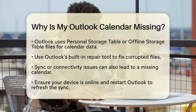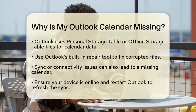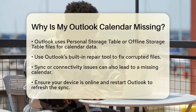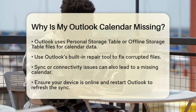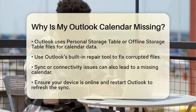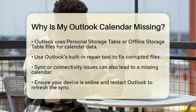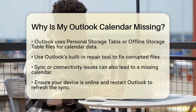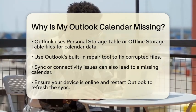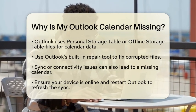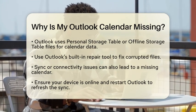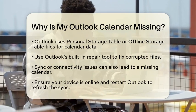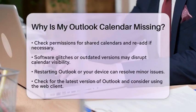Another reason your calendar might be missing is due to sync or connectivity issues. If your internet connection is poor or if there was an interrupted sync, your calendar may not appear. Make sure your device is online and try restarting Outlook to force a fresh sync. If you are using shared calendars, check the permissions or re-add the calendar if the sharing link was revoked.